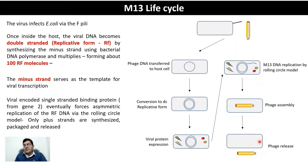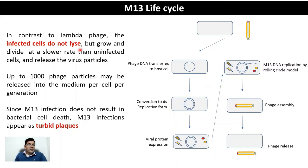In contrast to Lambda phage, infected cells do not lyse but grow and divide at a slower rate than uninfected cells while releasing virus particles. Up to 1,000 phage particles may be released into the medium per cell per generation. Since M13 infections do not result in bacterial cell death, M13 infections appear as turbid plaques.